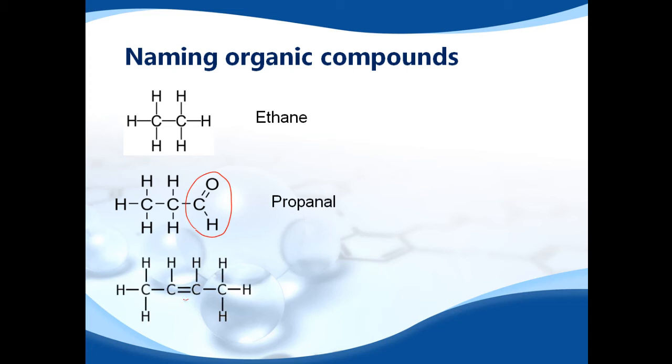The next one, we have a double bond here. And we have one, two, three, four carbons. So it's but. And the double bond is on the second carbon. Therefore, it becomes but-2-ene.